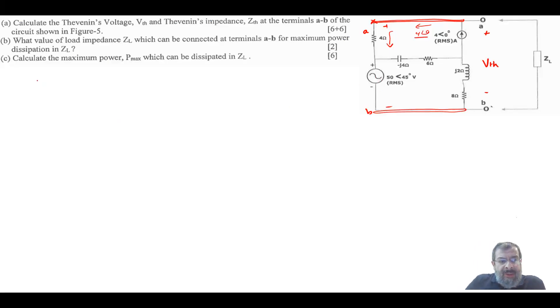So basically your V Thevenin is nothing but the 4 ohm times 4 angle of 0 plus 50 angle of 45.